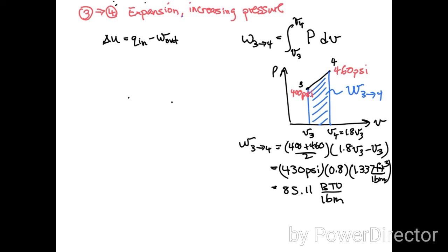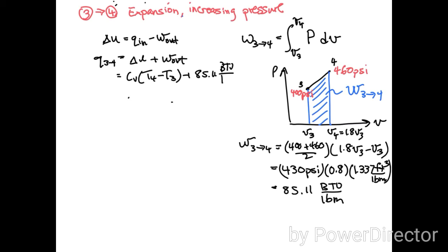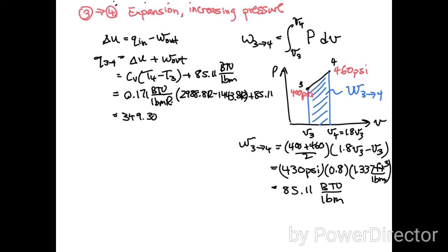Going back to the energy balance, Q_in(3→4) equals delta U plus W_out, which equals cv(T4 − T3) plus 85.11 BTU/lbm. Plugging in the known values for cv, T4, and T3, the heat input during this process equals 349.30 BTU per pound mass.